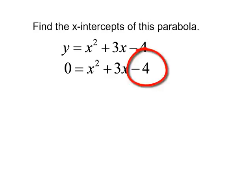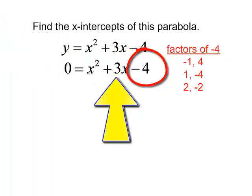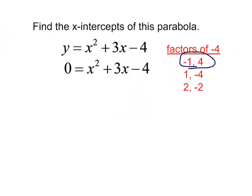In this case, I will need the factors of negative 4, and I need to look at these factors and see which one will add to positive 3. I will choose negative 1 and positive 4. We have zero is equal to x minus 1 times x plus 4. We will use the zero product property.